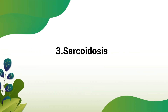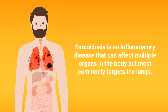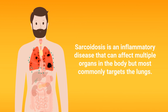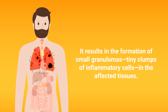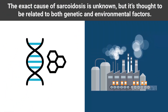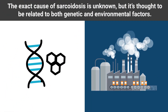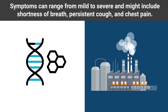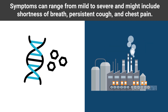Sarcoidosis is an inflammatory disease that can affect multiple organs in the body, but most commonly targets the lungs. It results in the formation of small granulomas in the affected tissues. The exact cause of sarcoidosis is unknown, but it's thought to be related to both genetic and environmental factors. Symptoms can range from mild to severe and might include shortness of breath, persistent cough, and chest pains.